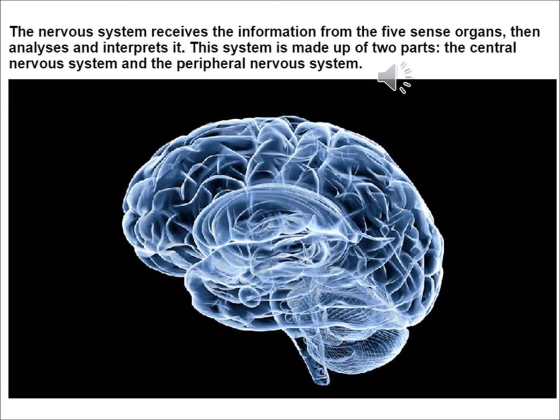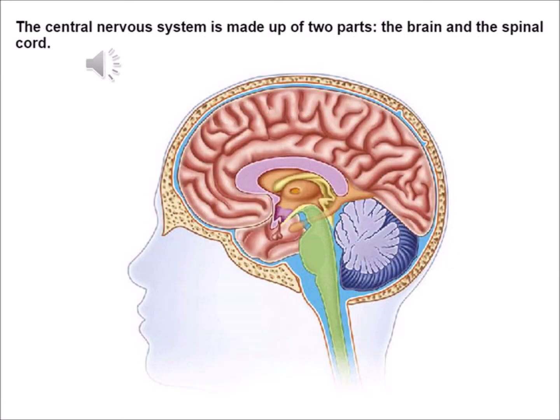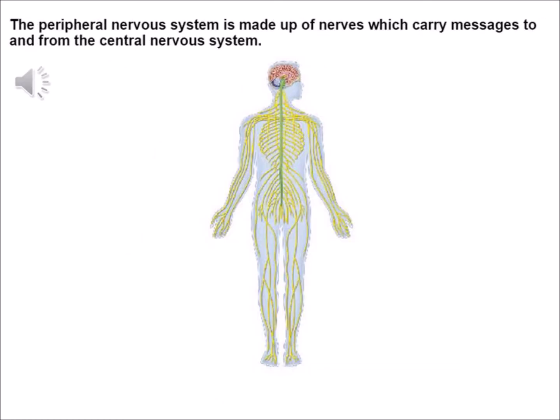This system is made up of two parts: the central nervous system and the peripheral nervous system. The central nervous system is made up of the brain and the spinal cord. The peripheral nervous system is made up of nerves, which carry messages to and from the central nervous system.